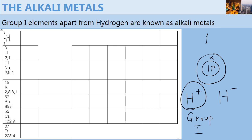But when it gains 1 electron to form the hydrogen anion, it behaves like a group 7 element. Therefore, hydrogen can either lose or gain an electron to form a stable configuration.